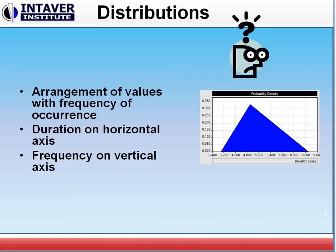Now what are distributions? For the purposes of schedules, they are arrangements of values with the frequency of occurrence. We can see on this example that duration is on the horizontal axis and goes from three to nine days, and the frequency is on the vertical axis. There's almost no chance we'll be at three days or nine days, and the most likely is at five days, about 33 or 34 percent.